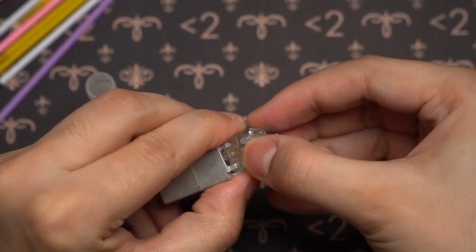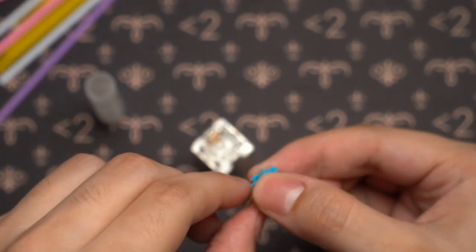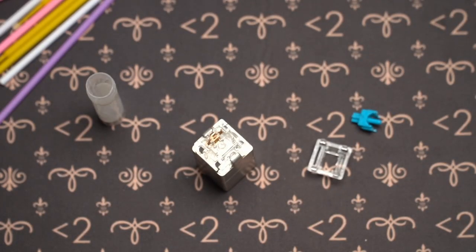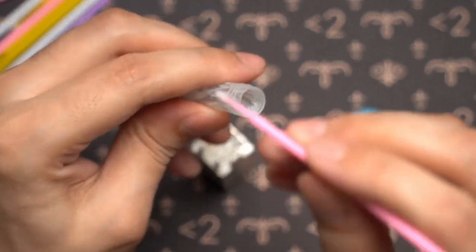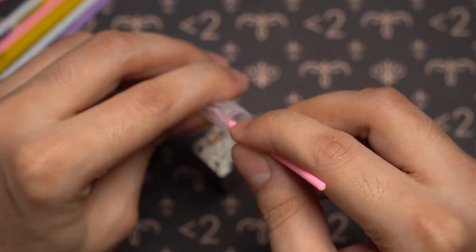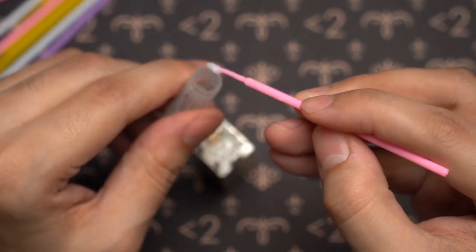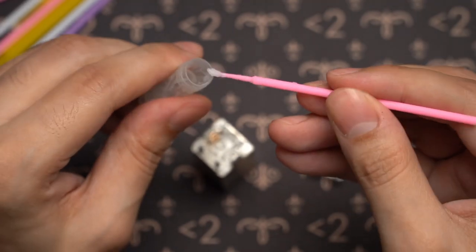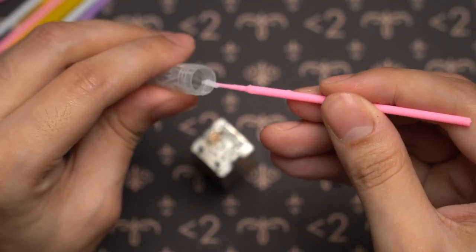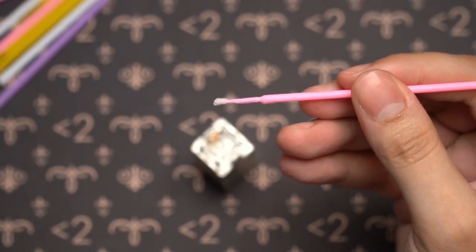We're going to follow the same methodology here. I'm going to put the stem aside and just grab a little bit of 204g0. See, this is too much, for example. So I'm going to go ahead and wipe that off. There we go. That's much more manageable.